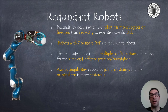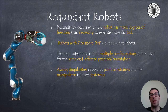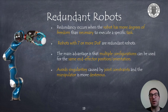Classic robotic arms can be redundant robots. Redundancy occurs when the robot has more degrees of freedom than needed for a specific task. We will usually refer to redundant robots as those with seven or even more degrees of freedom, which allows solving tasks up to six degrees of freedom with redundancy. The main advantage is that multiple configurations can achieve the same position and orientation of the end effector.